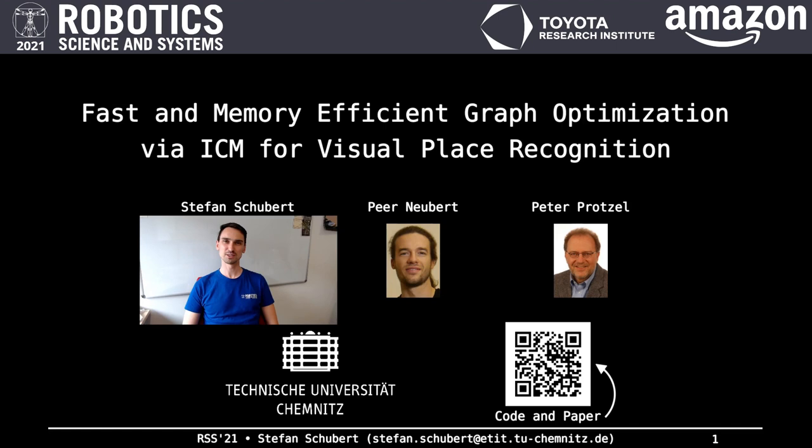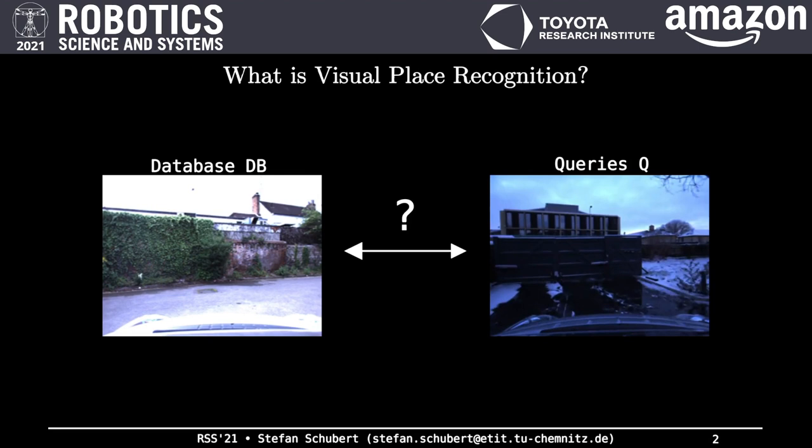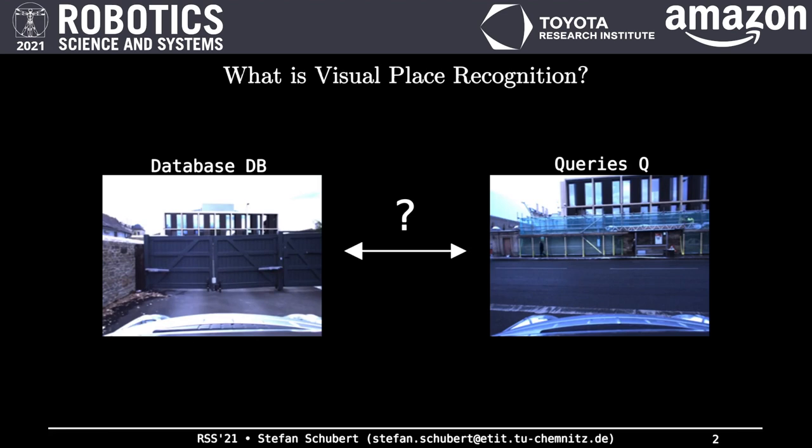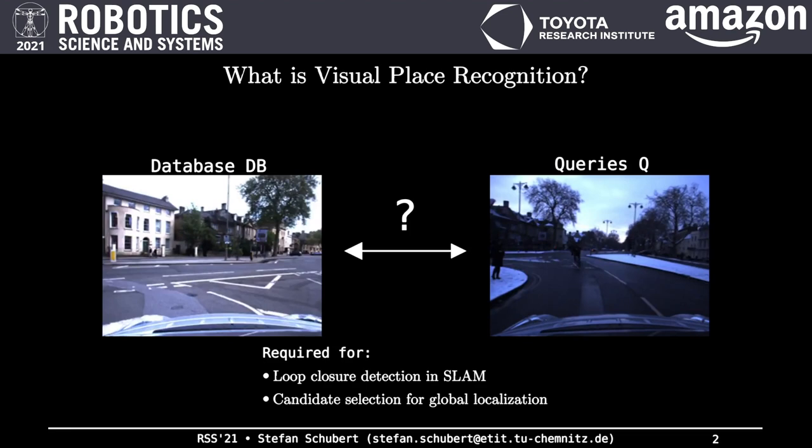Let's start with a short recap of what visual place recognition is. Given a potentially pre-recorded set of images, the database, the task is to match incoming query images in order to find the same places, potentially despite different time of day, changing weather, or even different seasons like summer and winter as shown in this example. Visual place recognition is required for tasks like loop closure detection in SLAM or candidate selection for global localization.